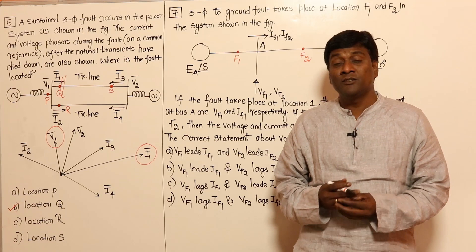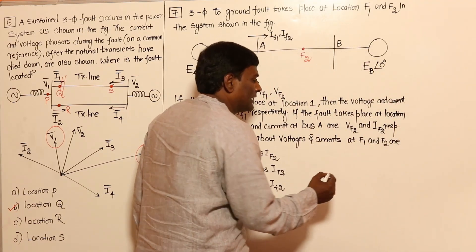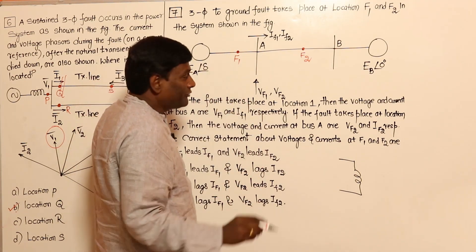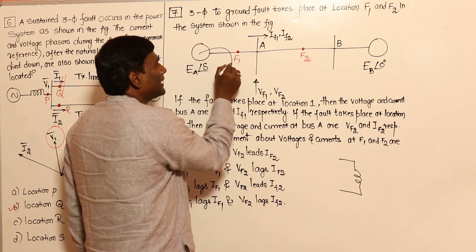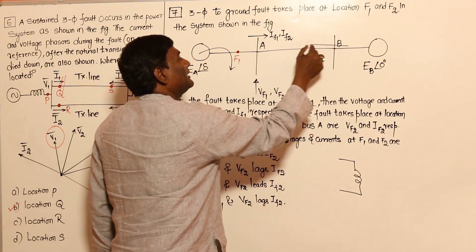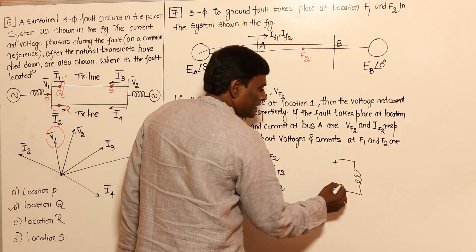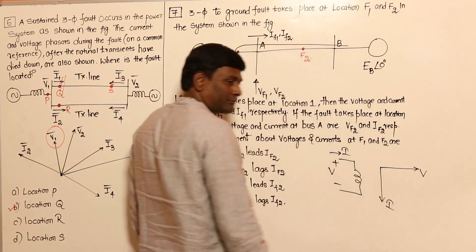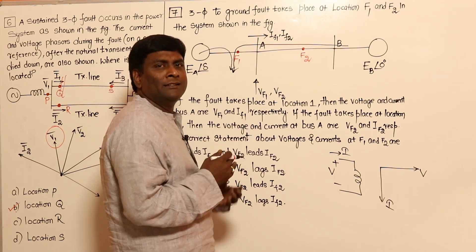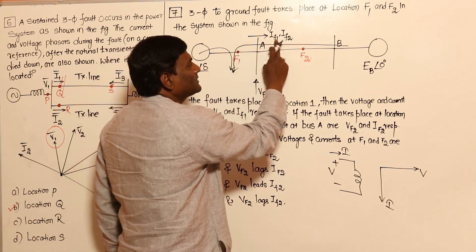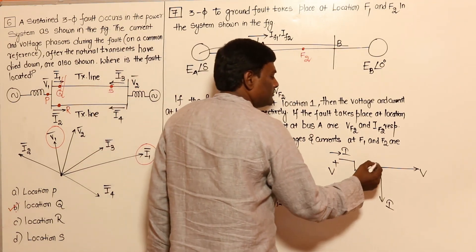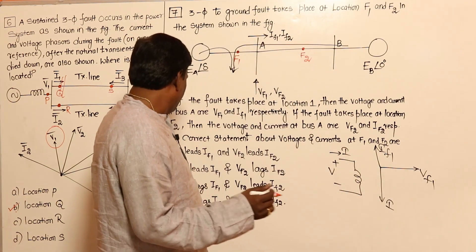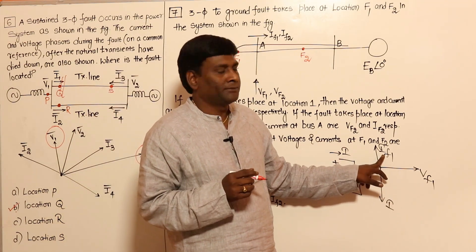We should consider fault impedance — neglecting the resistance part. If the fault occurs at F1, the generator gives current in one direction; If1 is in this direction. Normally in an inductor, voltage and current directions follow a specific polarity. So If1 is in this direction and the generator gives current in the opposite direction — 180 degrees — so Vf1 lags behind If1. Problem solved.